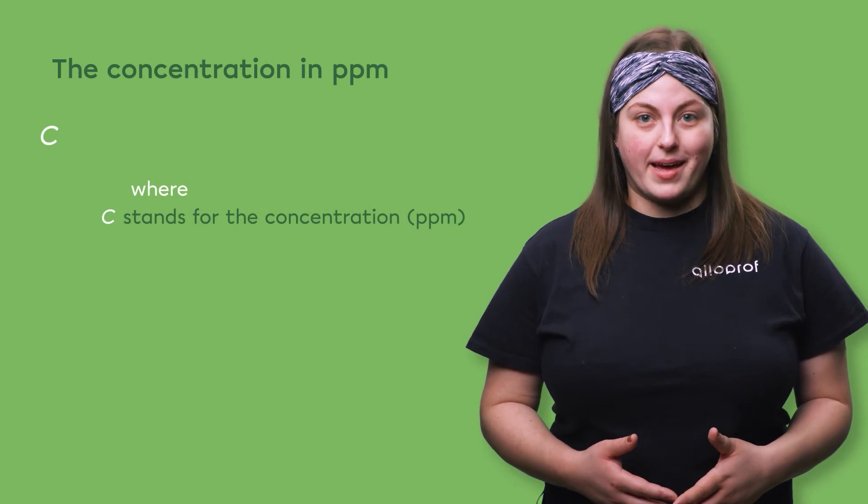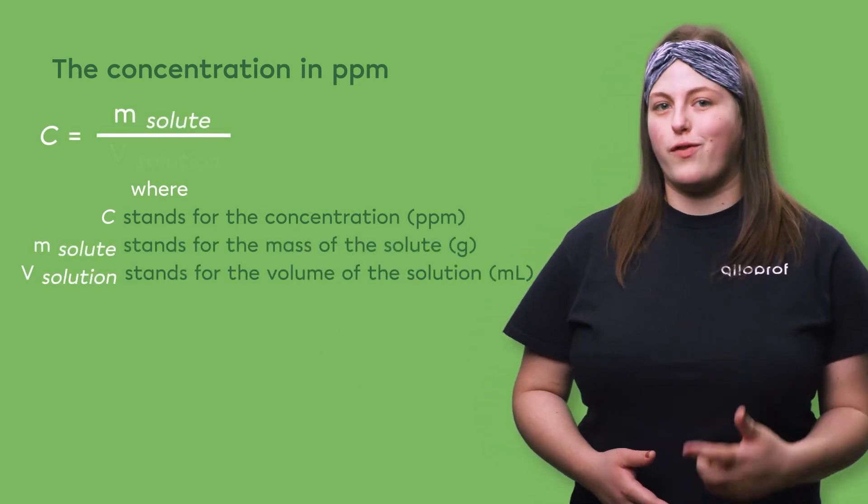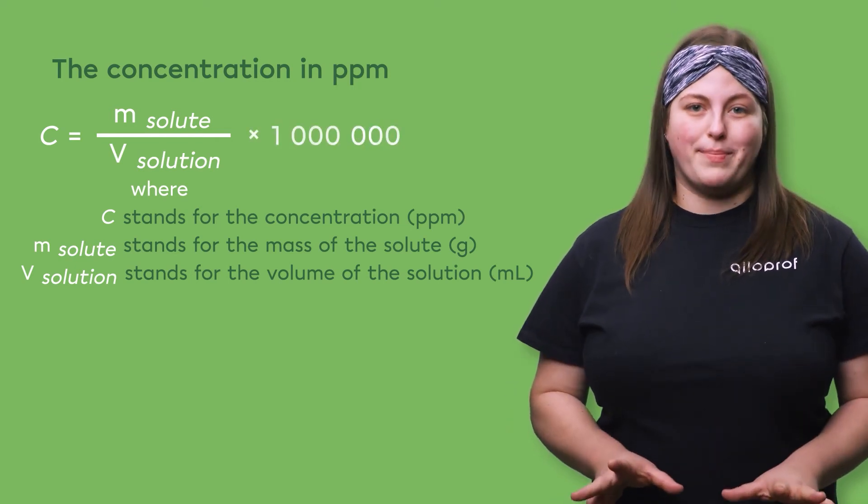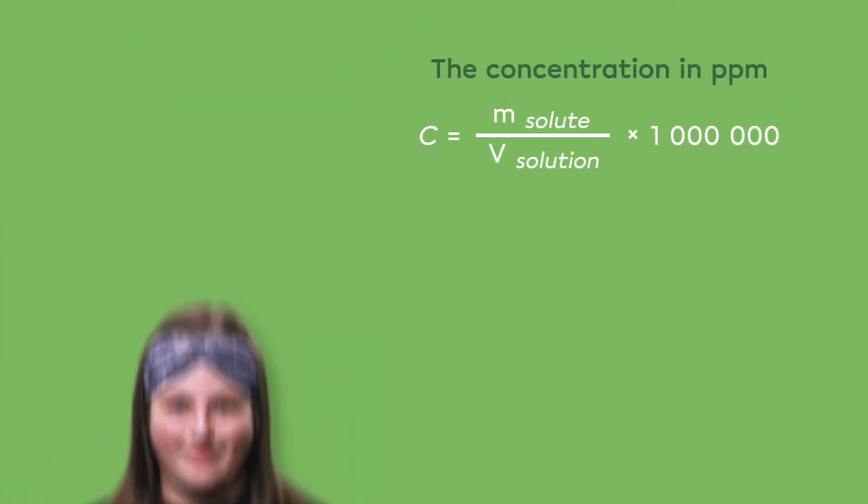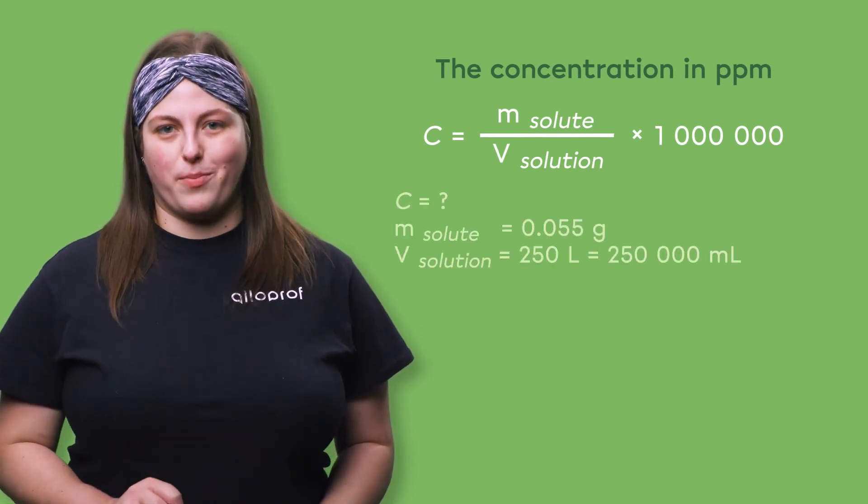The concentration in ppm is calculated by dividing the mass of the solute by the volume of the solution, and then multiplying everything by 1 million. Let's replace these variables with the values given in the problem.